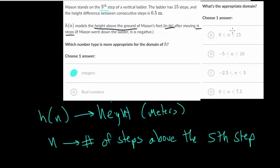And then talking about the appropriate domain. So remember, it's the lowest value that he can have for the number of steps above or below that fifth step. And we want to go up to the highest number.